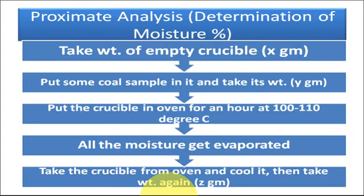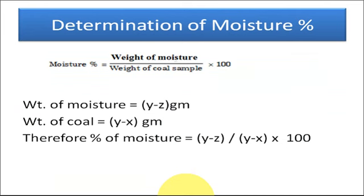To summarize the moisture procedure: a known weight of coal sample is taken in an already weighed silica crucible. The crucible is placed in an electric oven at 100 to 110 degrees centigrade for about one hour. It is then taken out, cooled in a desiccator, and weighed again — this weight is crucible plus moisture-free coal. By this formula we can calculate the percentage of moisture content in the coal sample.